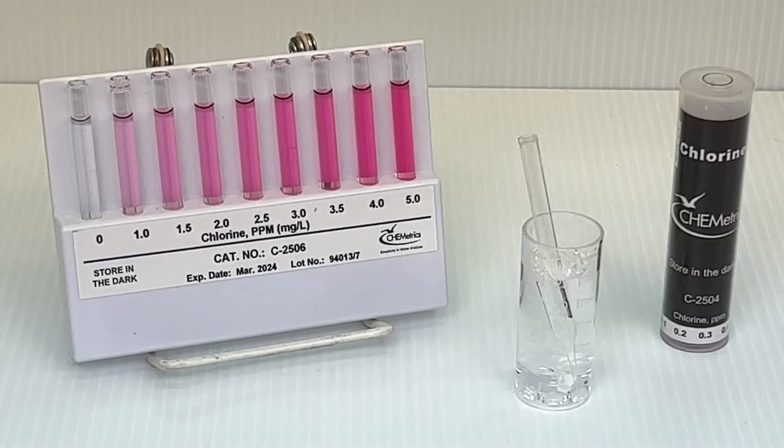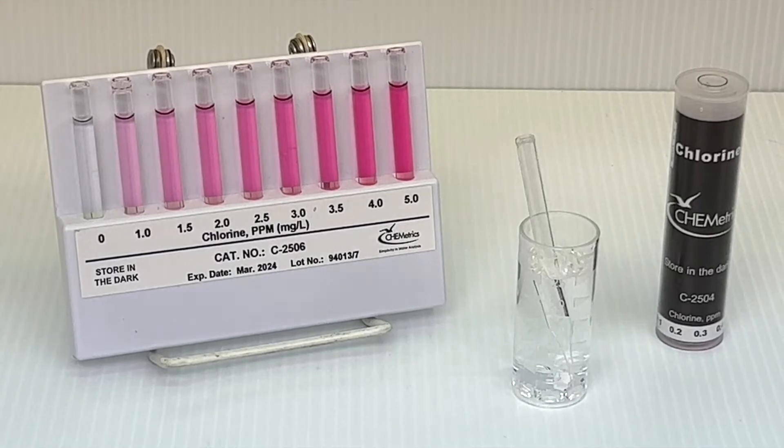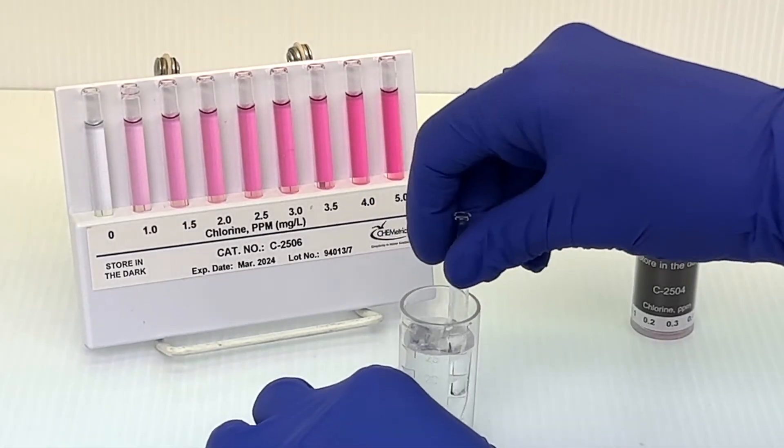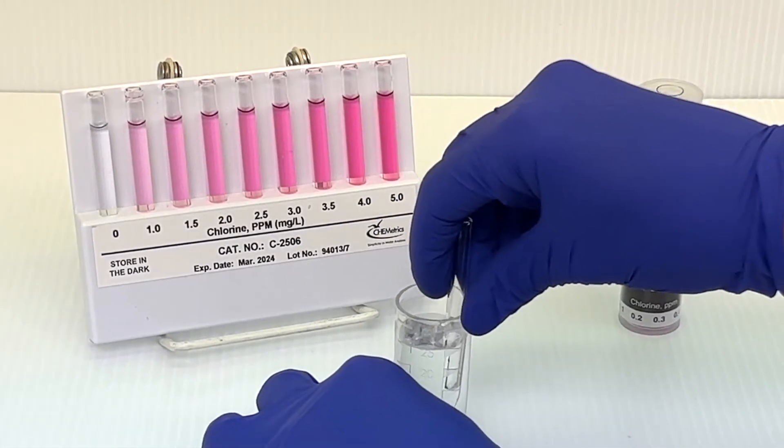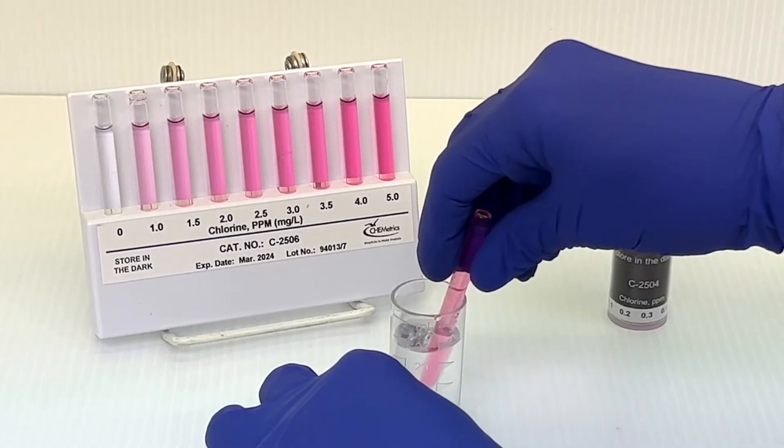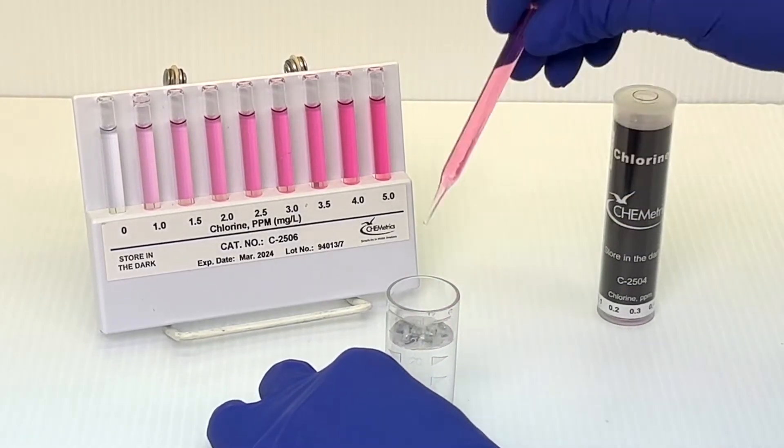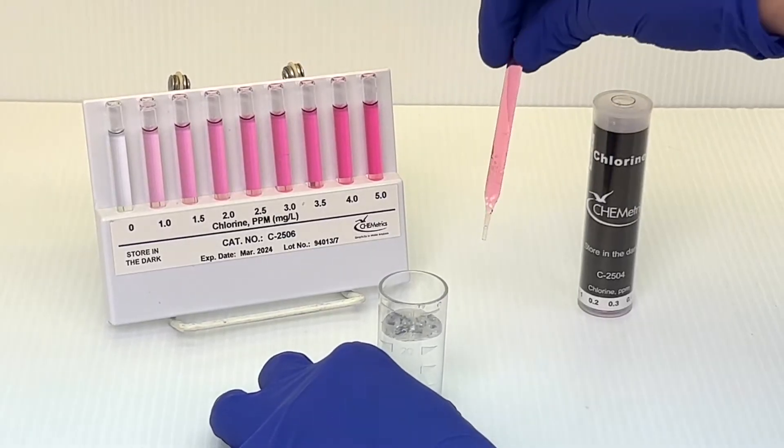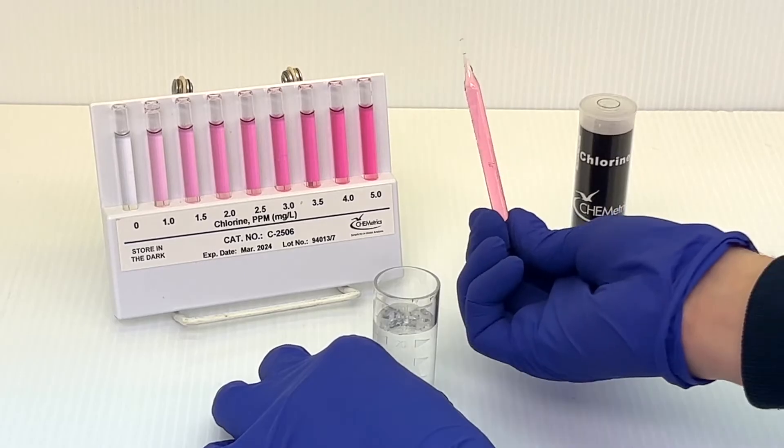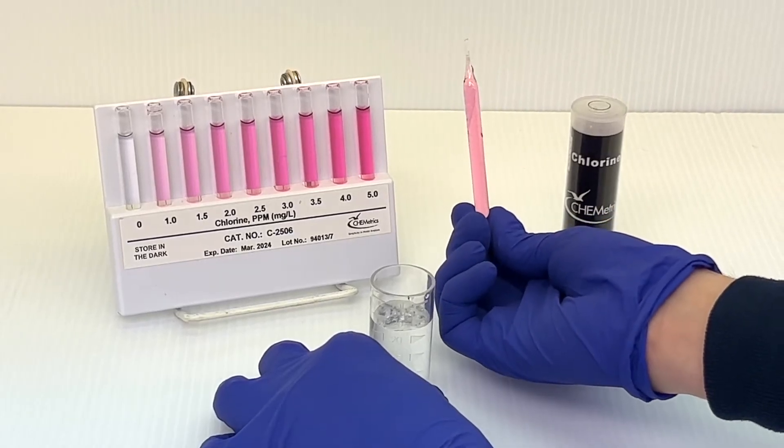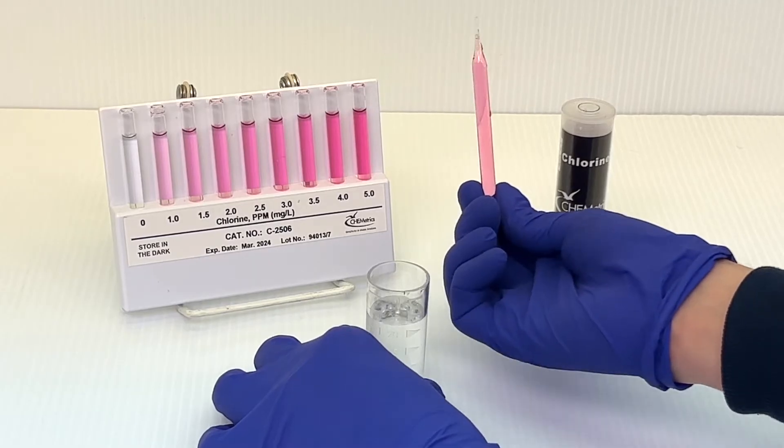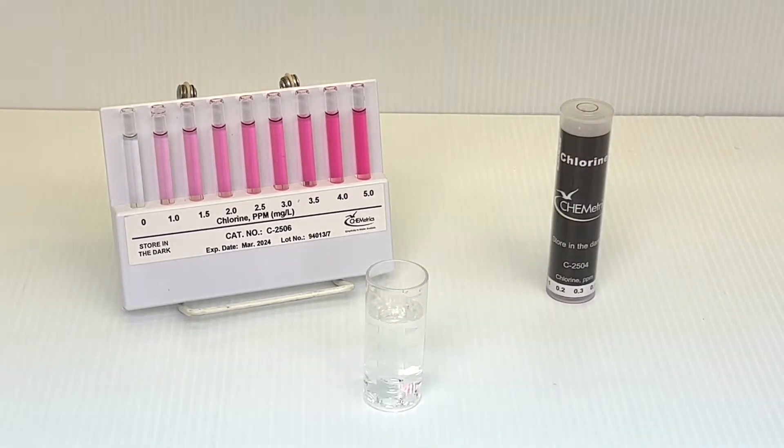We'll tell you more about how each of these comparator styles are read in a minute. First, some background. Cometrix comparators are specially manufactured to match the color, or hue, as well as the intensity of Cometrix test ampoules that have been snapped in various samples—that is, in solutions of corresponding analyte concentrations. By sealing our dyes in ampoules, we're able to closely recreate the color generated in the test ampoules.